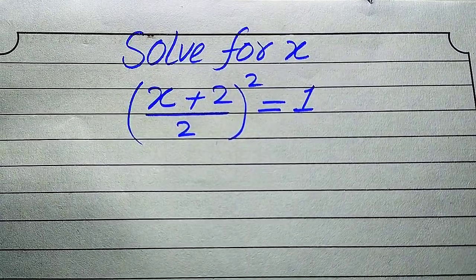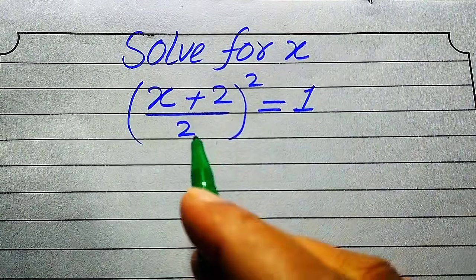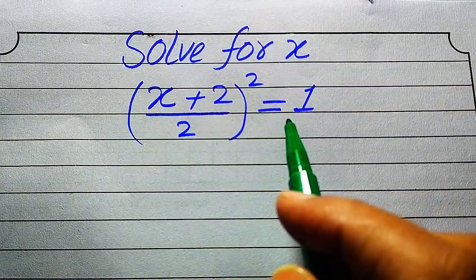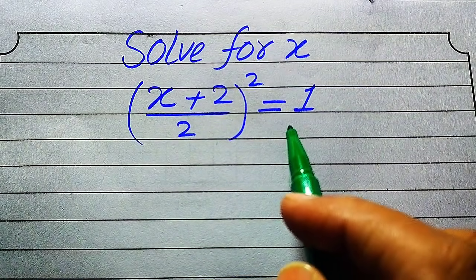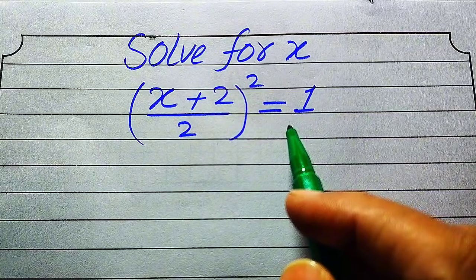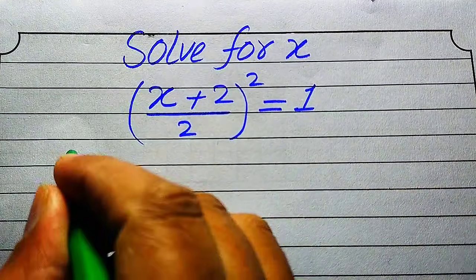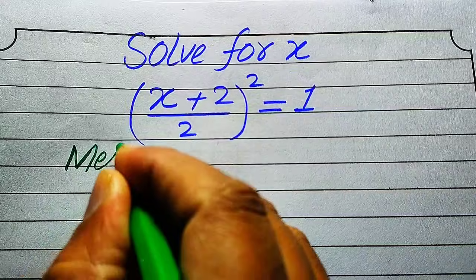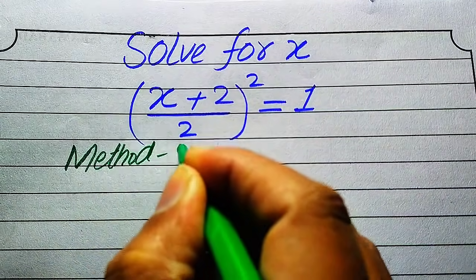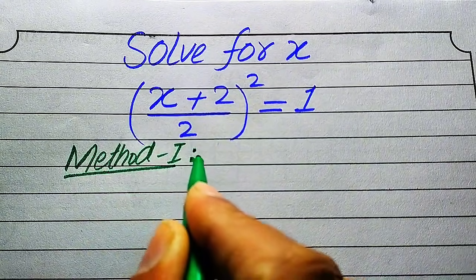Hello everyone. We will solve this problem: find the values of x if (x + 2) / 2, whole squared, equals 1. We will solve this problem using two methods. I hope you like both of these methods, but if you have another method in mind, please write it in the comment section.